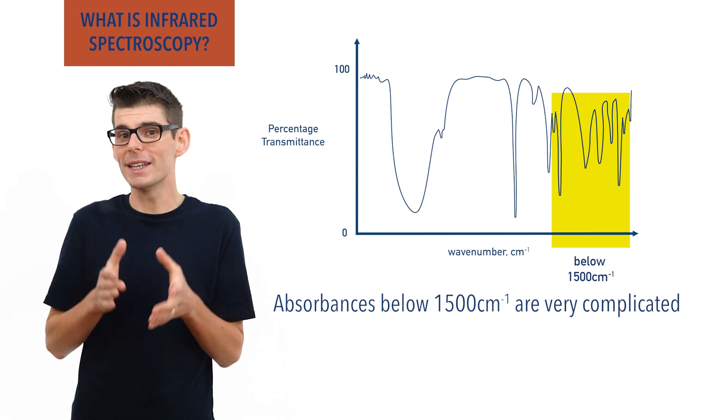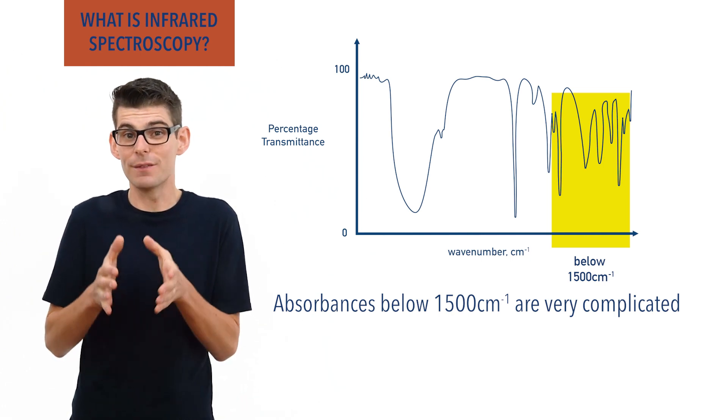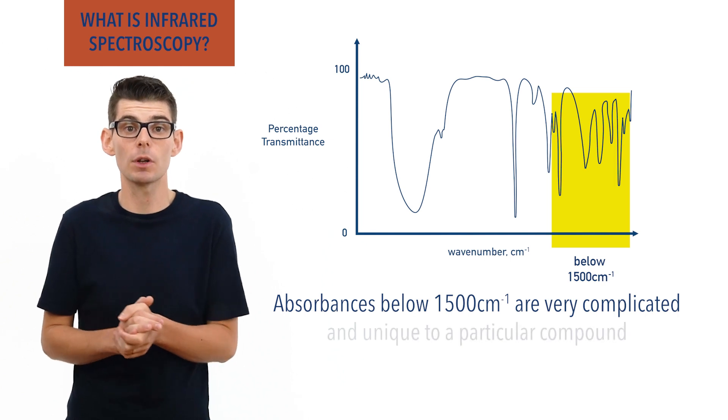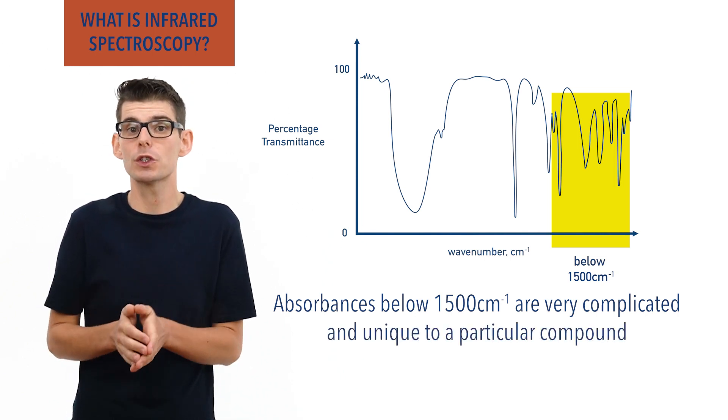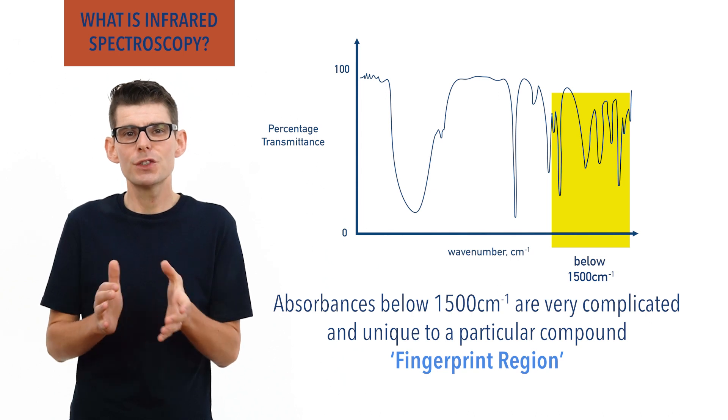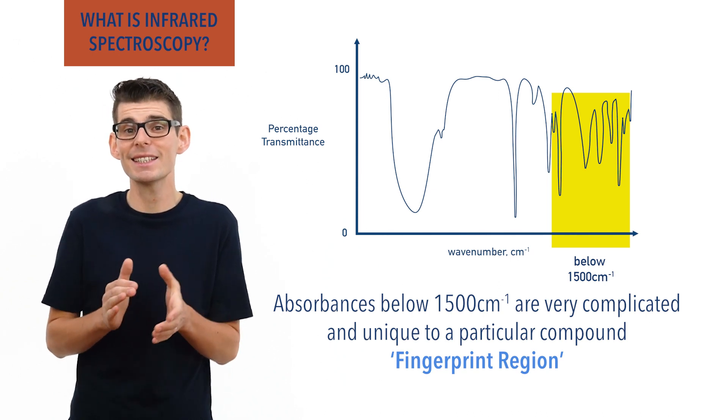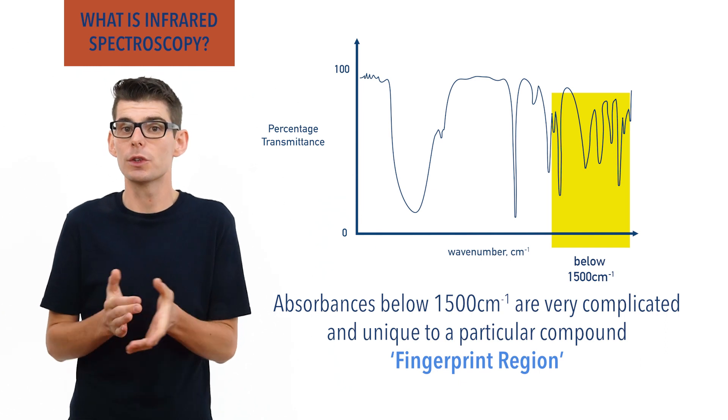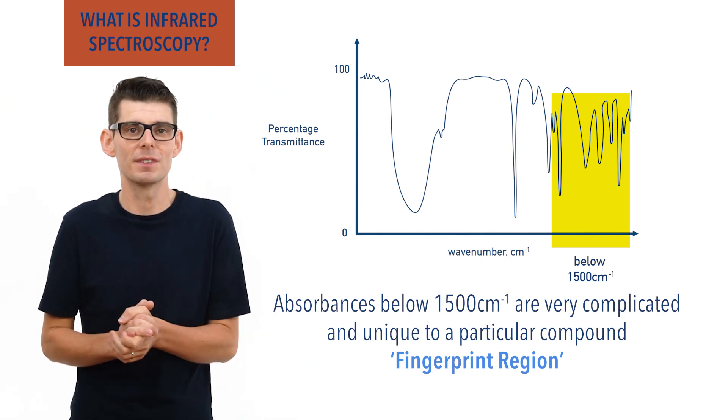The combination of all absorbences and the shape of this region is, however, unique to a particular molecule, meaning it is referred to as the fingerprint region. Due to its complexity it isn't analyzed in detail at this level and is instead just used to quickly identify given substances.